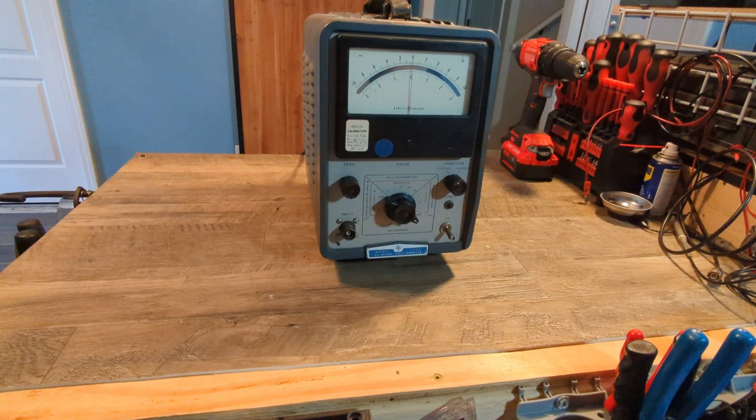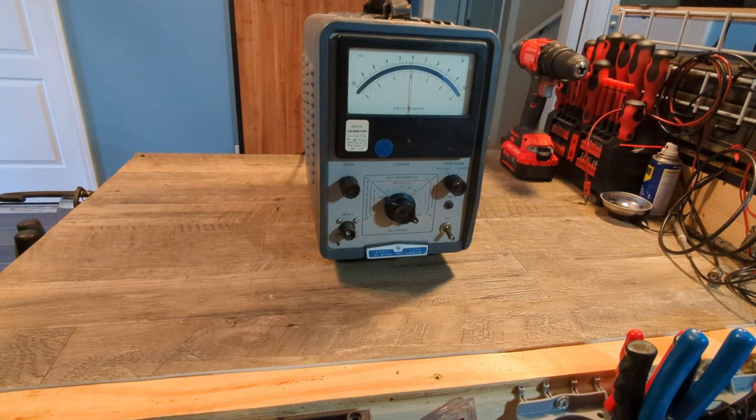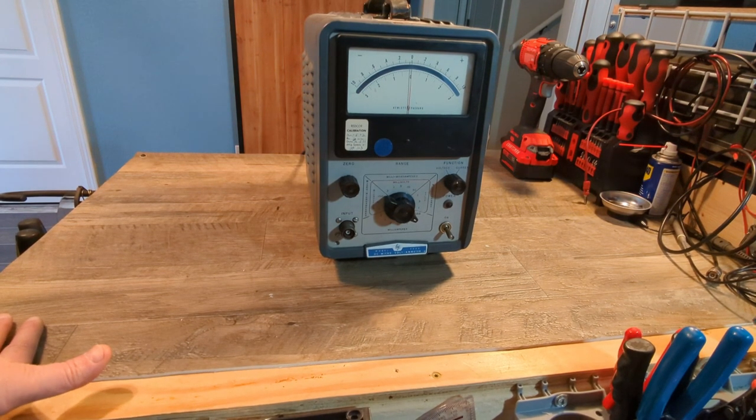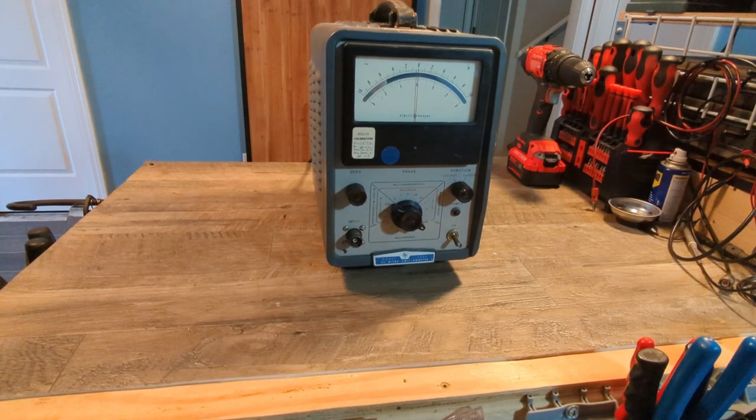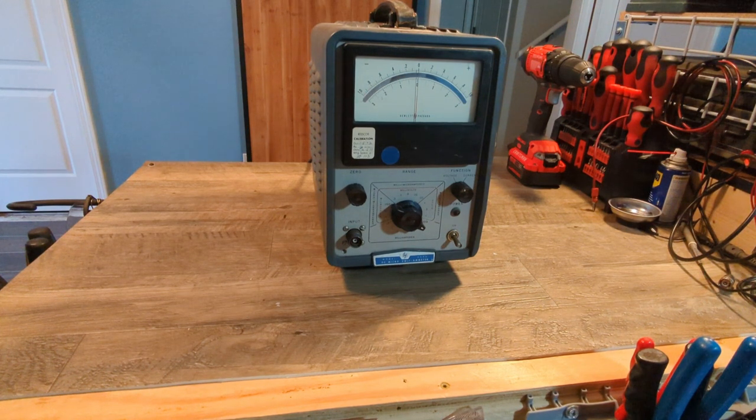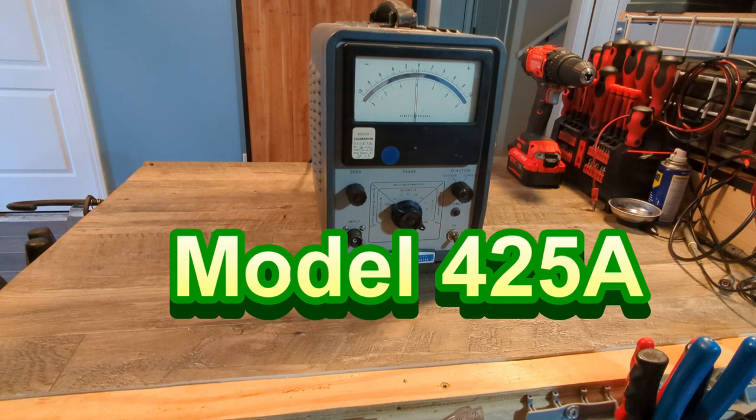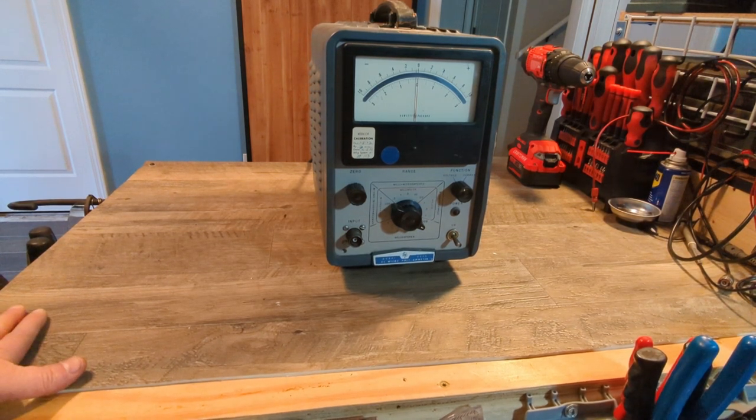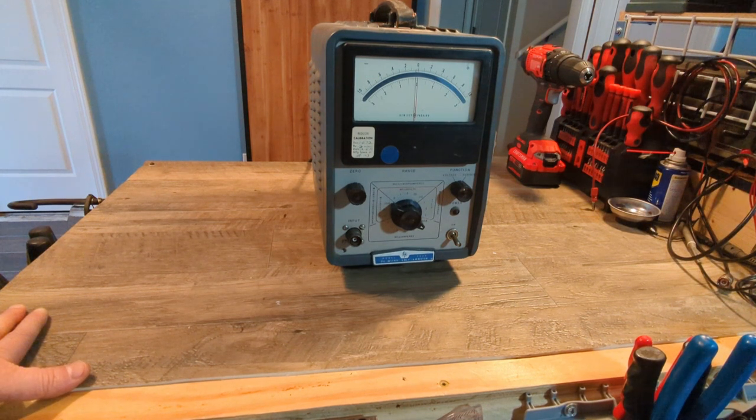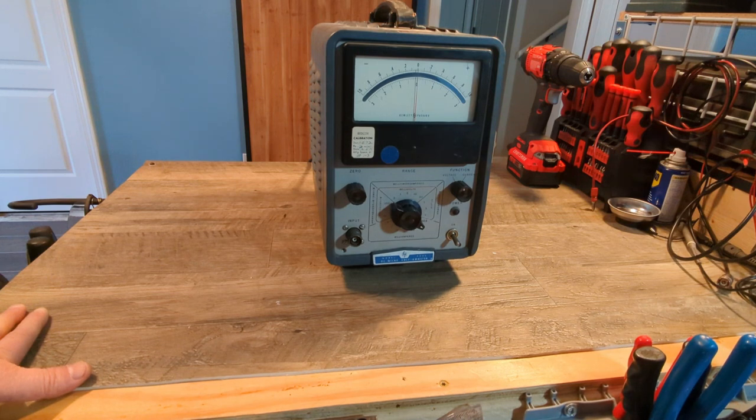So what is this thing? Well, this happens to be a piece of test equipment that you can test very very small currents and voltages. It is the HP model 423 alpha DC microvolt amp meter.